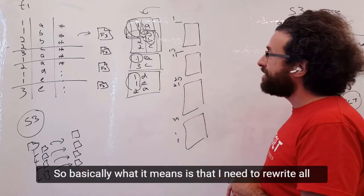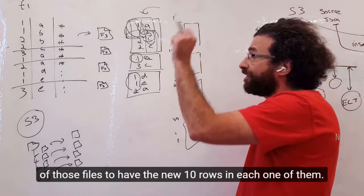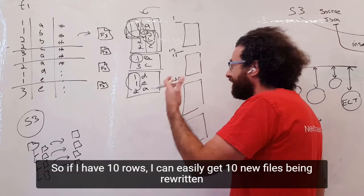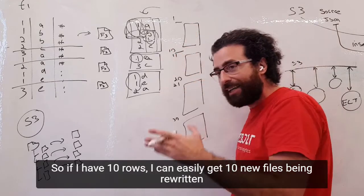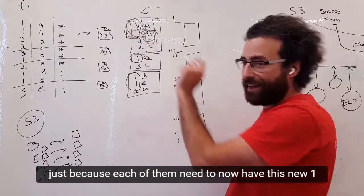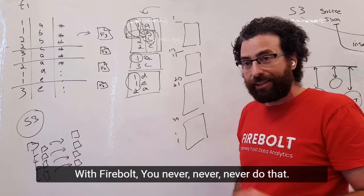Basically what it means is that I need to rewrite all of those files to have the new 10 rows in each one of them. So if I have 10 rows, I can easily get 10 new files being rewritten just because each of them needs to now have this new one. With Firebolt, you never, never, never do that.